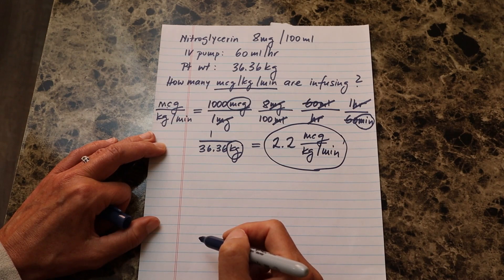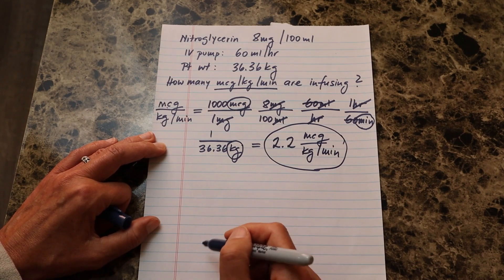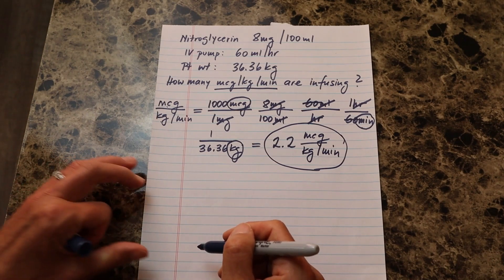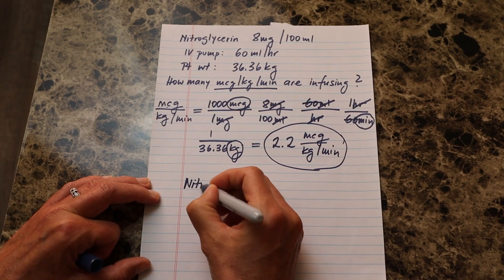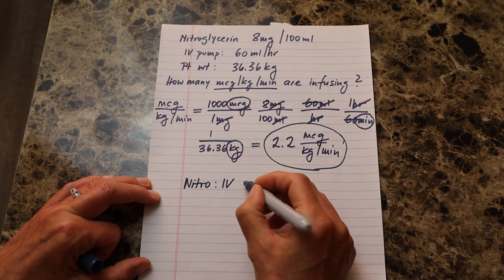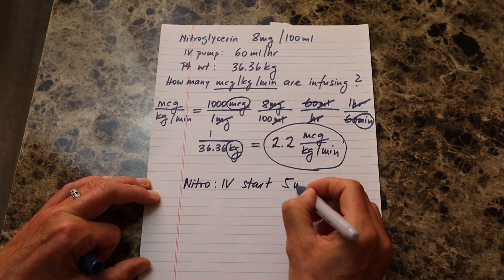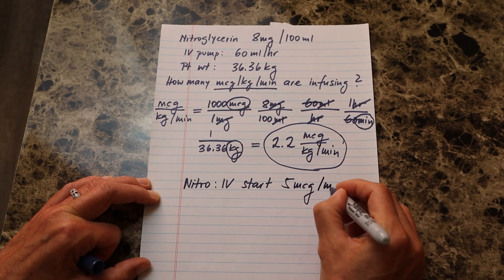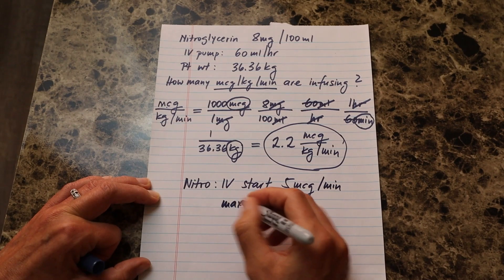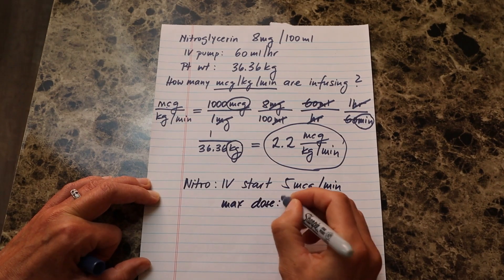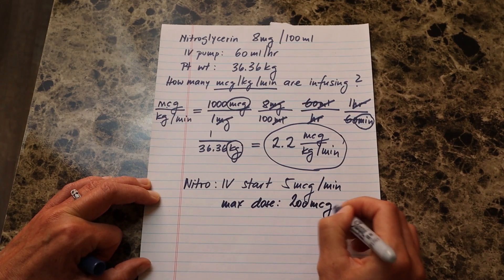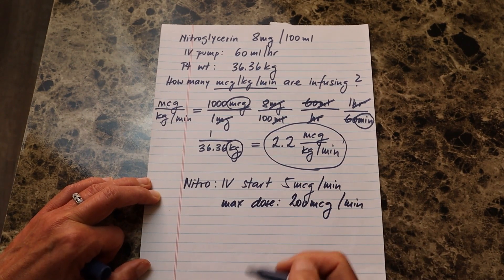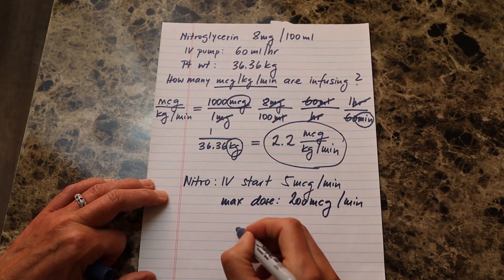I have not used nitroglycerin in quite some time, so I could not remember the dosage. So I went back to my nifty drug book and it says for nitroglycerin infusion IV to start at 5 micrograms per minute. And the max dose is 200 micrograms per minute.